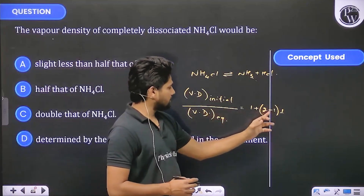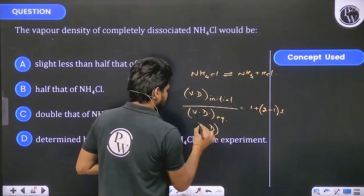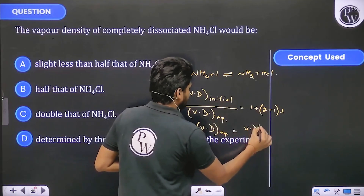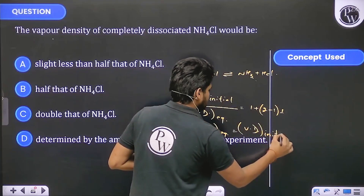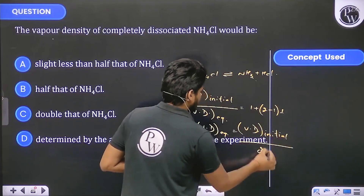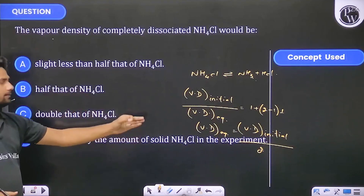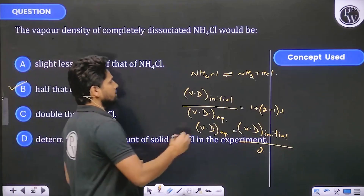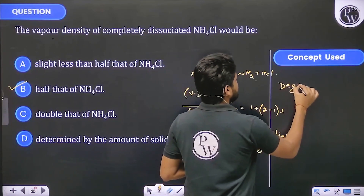2 minus 1 is 1, and 1 plus 1 is 2, so vapour density at equilibrium is initial vapour density divided by 2 — meaning the vapour density is half of the initial vapour density of NH4Cl. The concept used here is degree of dissociation.